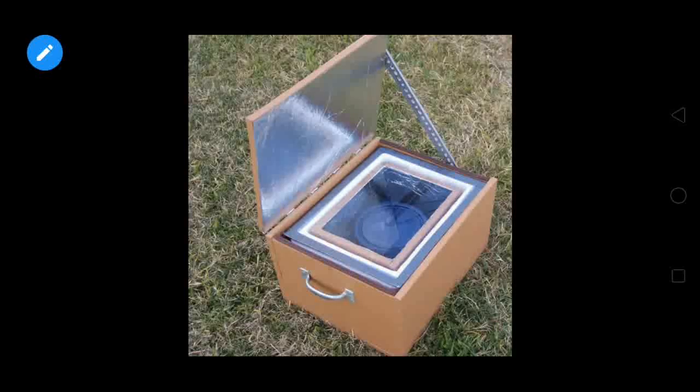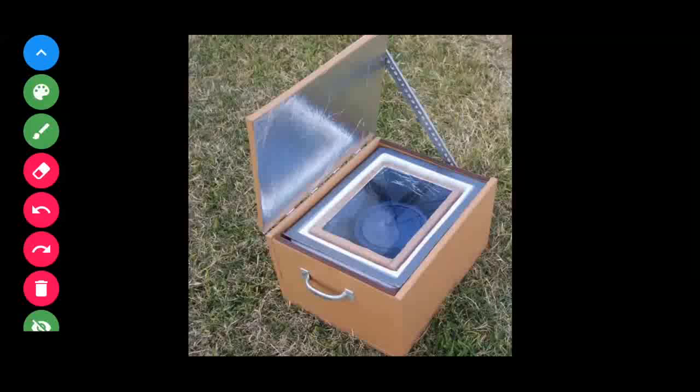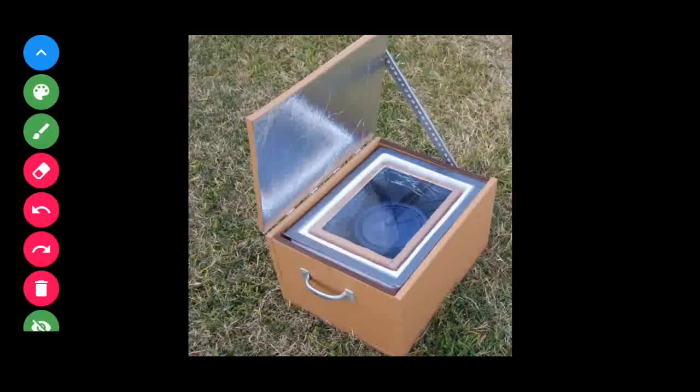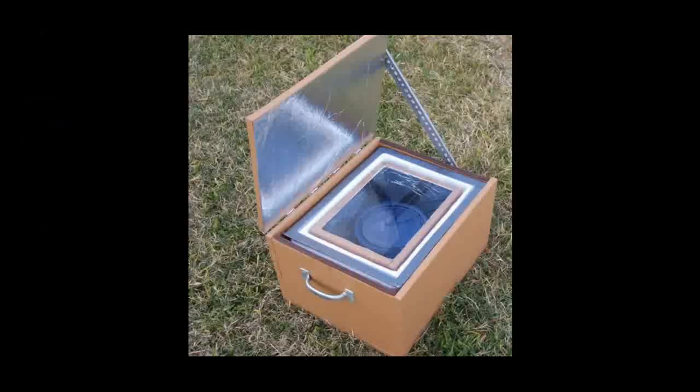The top of the box has a glass lid that helps to trap the heat. This is a glass lid here, it helps to trap the heat inside the solar cooker.